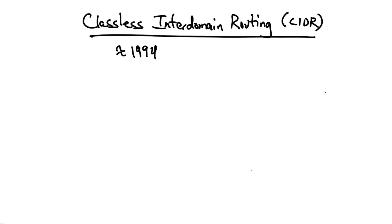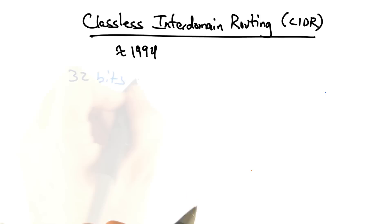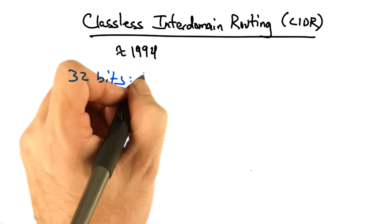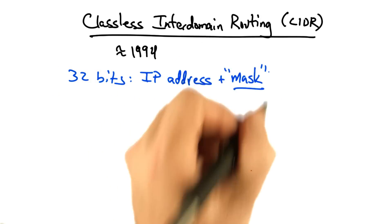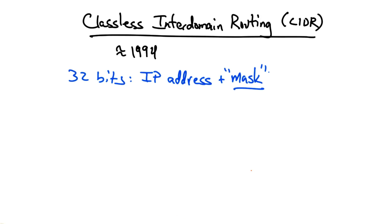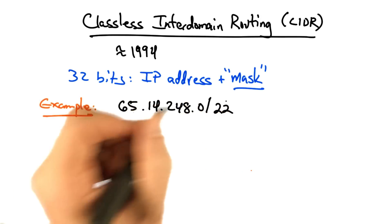The idea is that instead of having fixed network ID and host ID portions of the 32 bits, instead we would simply have an IP address and what is known as a mask, where the mask is variable length and indicates the length of the network ID.